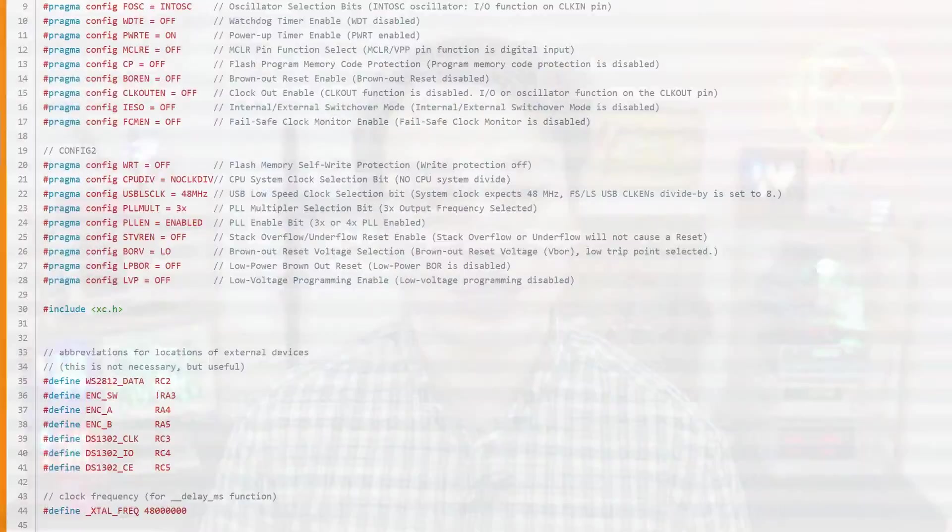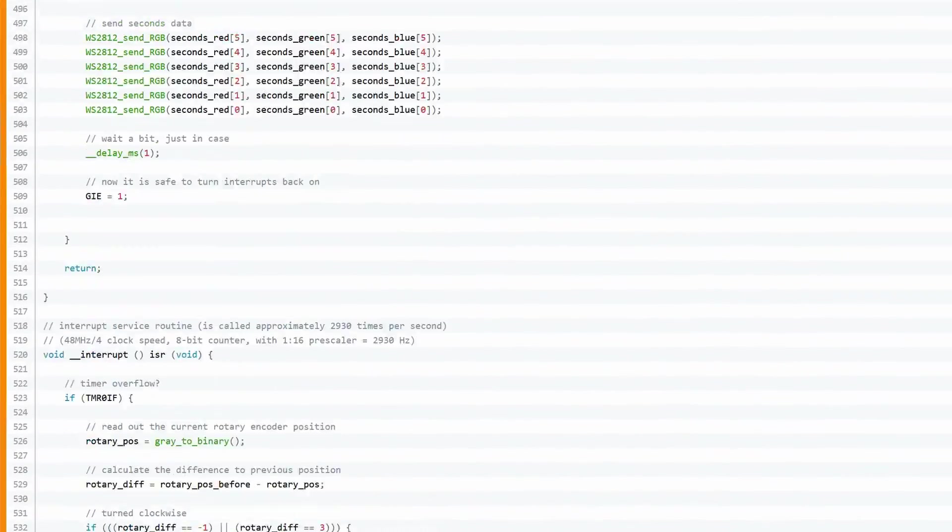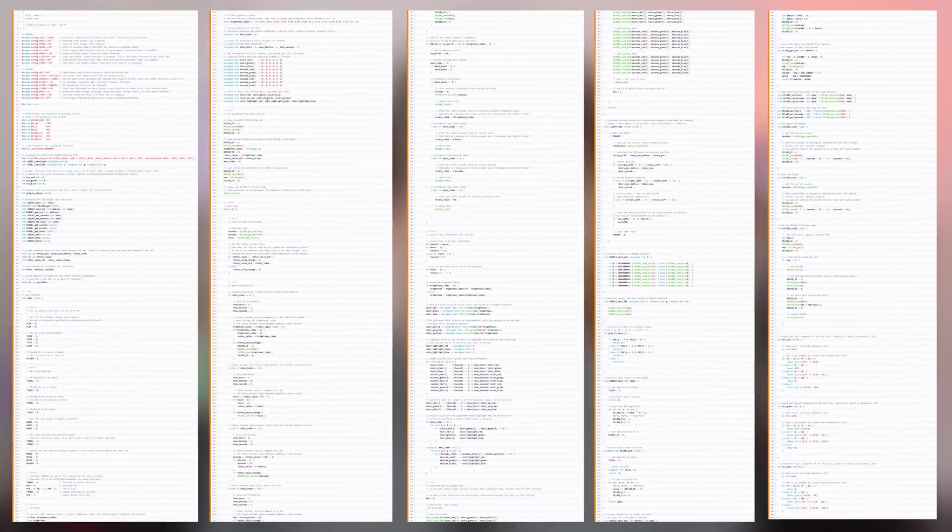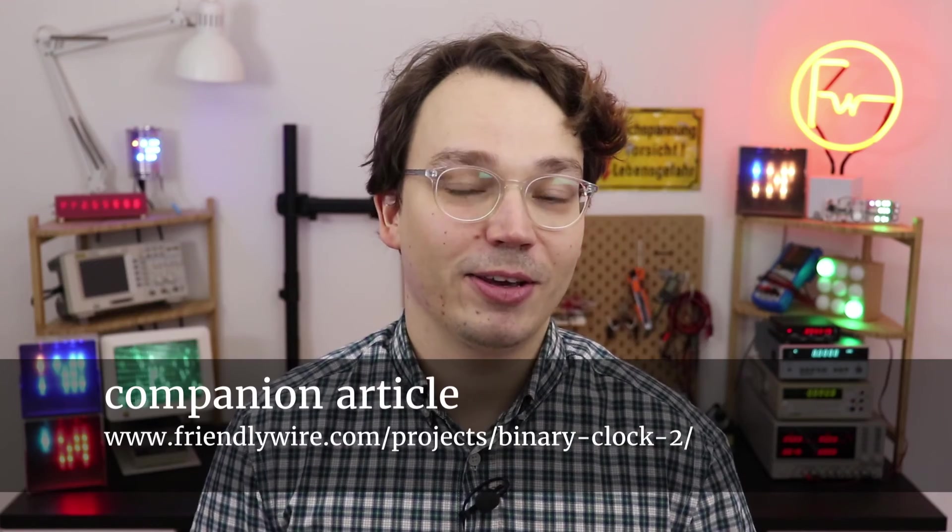Now this video here, like all my other videos, is supposed to be a tutorial which means I want to show you exactly how and why everything works. There's just one small problem. The code for this binary clock ended up being around 750 lines, which is a bit on the long side to cover in detail in this video here. But believe it or not, if you have a look at it, you actually may recognize parts of this code from previous videos. Like this part here deals with the rotary encoder. This part here deals with the DS1302 real-time clock IC and this part here deals with the NeoPixel LEDs that we all covered in previous videos. But if you want to have more details on the code, I invite you to check out the companion article right here.